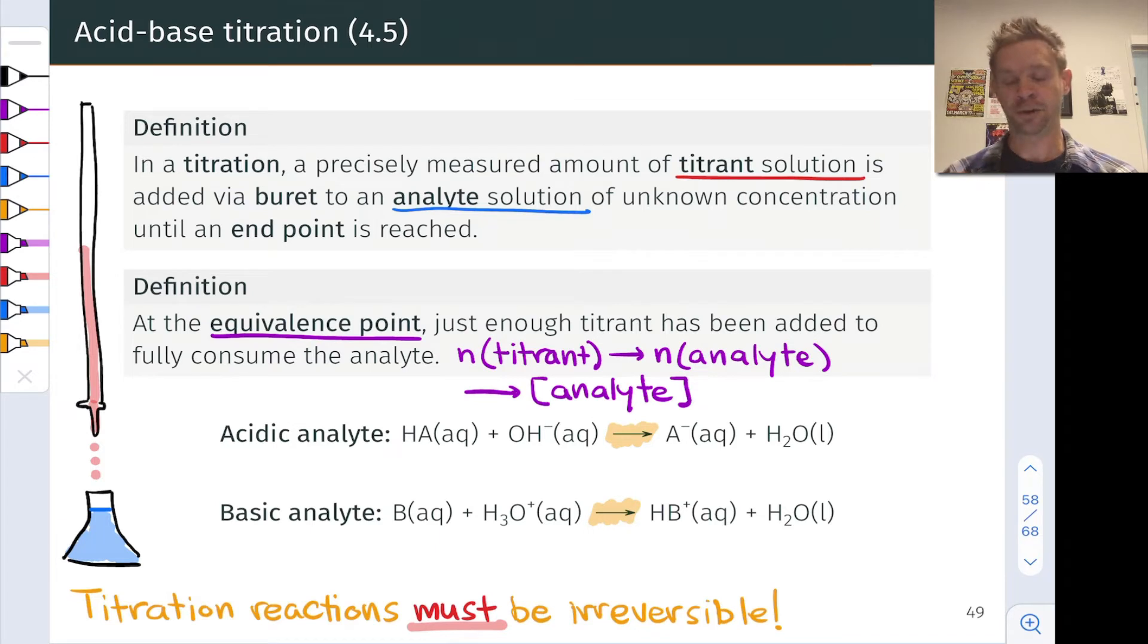It is key here though that the titration reactions are irreversible. They must be irreversible and complete. These reactions can't have any equilibrium back and forth. We want every molecule of hydroxide to react with HA, for example, to produce A⁻ and H₂O. Now, HA and A⁻ may have a separate equilibrium of their own, but the reaction between the titrant and the analyte must be complete.